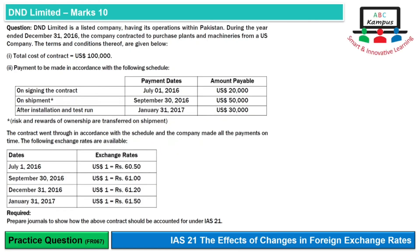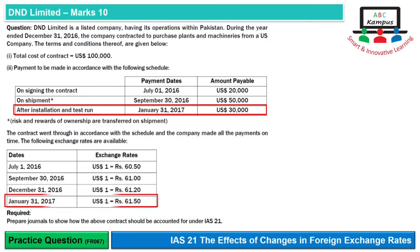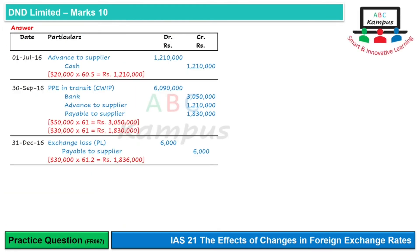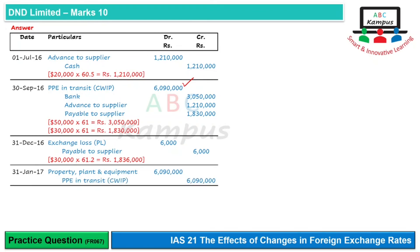Year end ke baad January 31st ko hamaari last payment hai, jab installation aur test run ho chuka hai. January 31, 2017 ko jo rate hai, that is 61.5. Ek baat toh yeh hogi ki jab hamaari installation aur test run ho chuka hai, toh humne jo capital work in progress banaya tha, use ab hume normal property plant and equipment ke taur par record kar dena chahiye. To property plant and equipment debit aur capital work in progress ko credit kar denge, taaki capital work in progress se transfer proper property plant and equipment ke andar ho jaae.